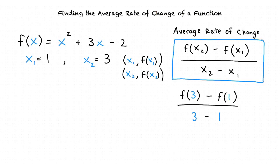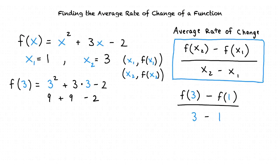Our next step is to find f of 3 and f of 1 by substituting those x values into the function f of x. For f of 3, wherever we see an x we substitute in a 3. The result is f of 3 equals 3 squared plus 3 times 3 minus 2, which gives us 9 plus 9 minus 2, equaling 16.